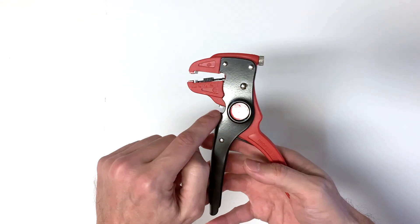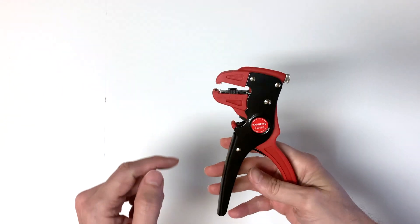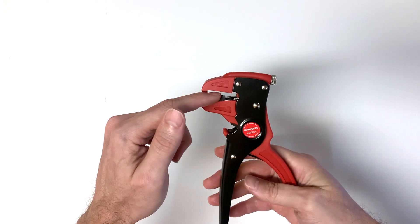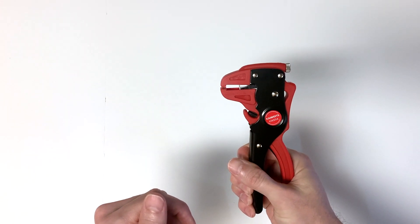A couple of features about the tool. Right here is going to be your wire cutter so you just insert your wire and cut it like that. This is the actual wire stripping mechanism so you'll insert your wire into here and use the tool to strip the wire.